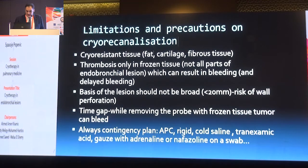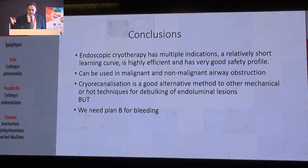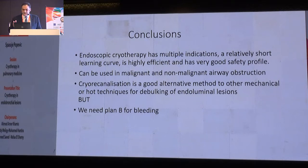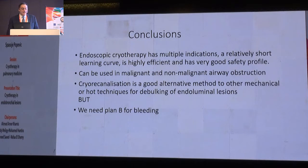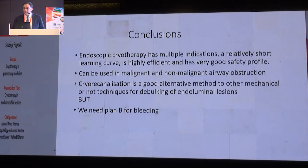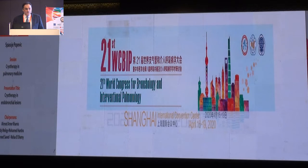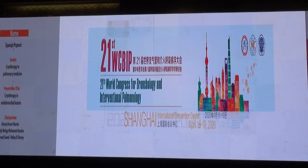You have to be ready to stop bleeding after all these procedures. To conclude: endoscopic cryotherapy has multiple indications, a relatively short learning curve, is highly efficient with a good safety profile, and can be used in both malignant and non-malignant central airway obstruction. Cryorecanalization is a good alternative method to other mechanical or hot techniques for debulking of endoluminal lesions, but always need plan B for bleeding. In April next year, there is a World Congress of Bronchology and Interventional Pulmonology in Shanghai — please send your abstracts.